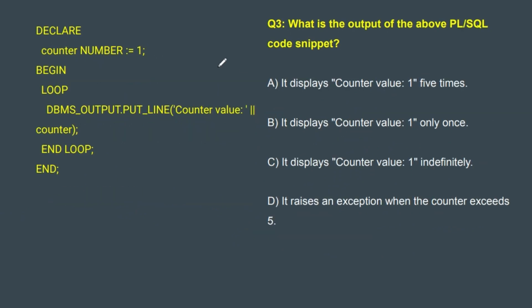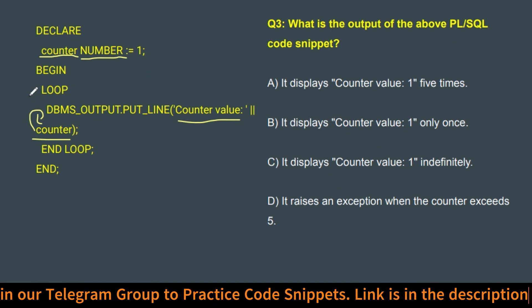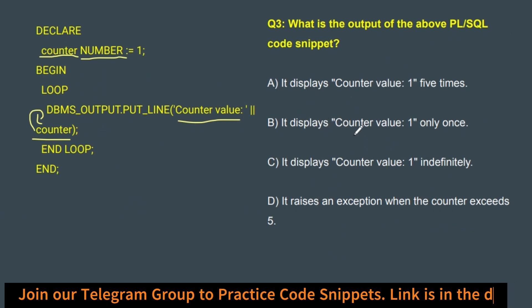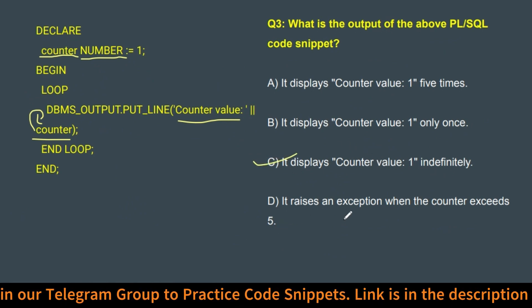Moving to the third question: What is the output of the above PL/SQL code snippet? We declare 'counter NUMBER := 1' — assigning 1 to the counter variable. 'BEGIN LOOP DBMS_OUTPUT.PUT_LINE(counter value)' — this will print 1. After printing, the loop goes back — this is not going to end because we do not have any exit condition. So it will indefinitely print counter value 1. Option A: displays counter value 1 five times — no. Option B: displays counter value 1 only once — no. Option C: displays counter value 1 indefinitely — correct, it will indefinitely print counter value 1. Option D: raises an exception when the counter exceeds — we do not have any such information.